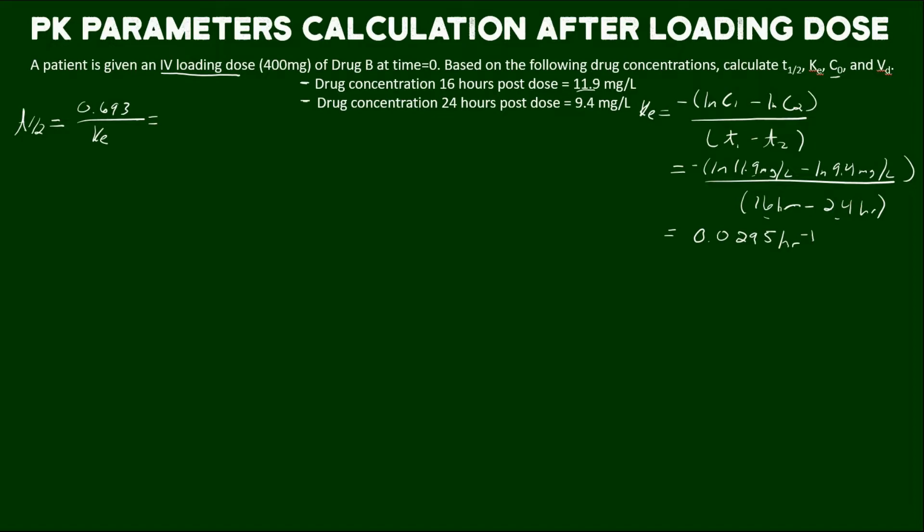you'd get 0.0295 hours to the minus 1. The top becomes unitless because we convert it by natural logs, and the bottom has the hours in it. So hours to the negative 1 is also equal to 1 over hour, but commonly we see it put as hours to the minus 1. So now that we have this answer, we can go back and calculate our half-life.